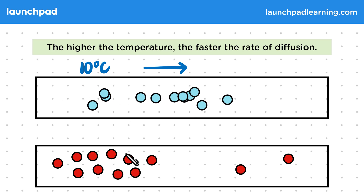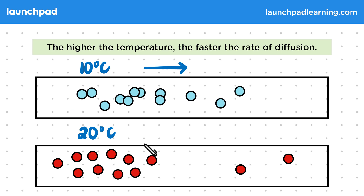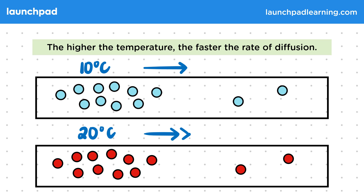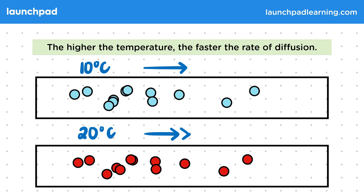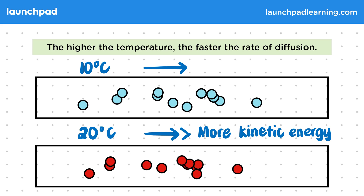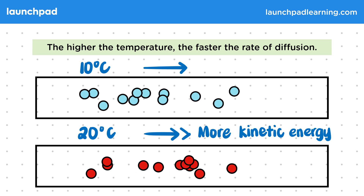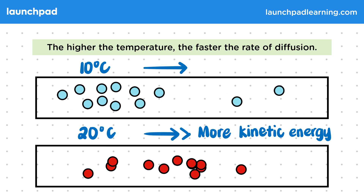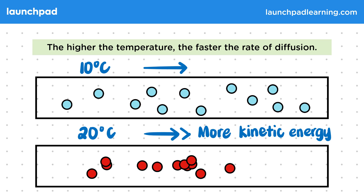The particles in this box are warmer at 20 degrees Celsius. They are also going to move down a concentration gradient, however they're going to move and mix more quickly. This is because they have more kinetic energy. Exam questions may give you examples of diffusion at different temperatures and ask you to identify at which temperature particles will diffuse more quickly or more slowly.